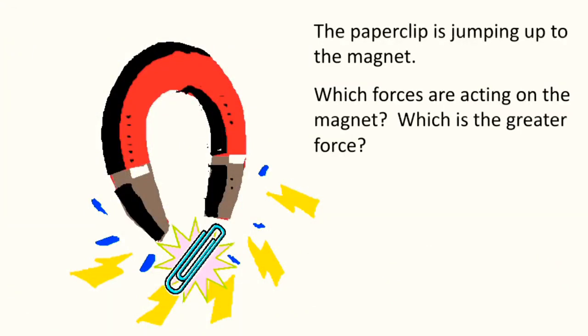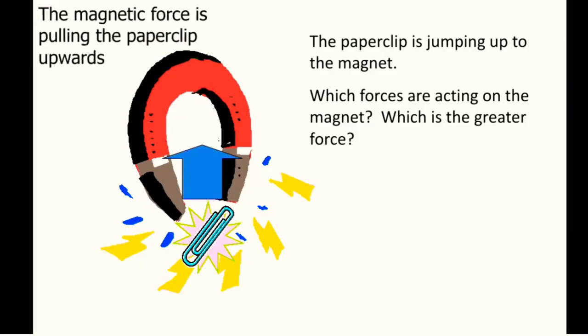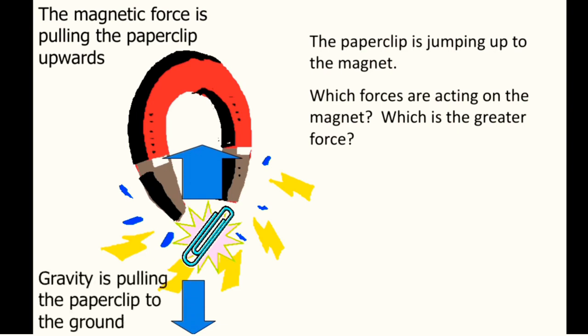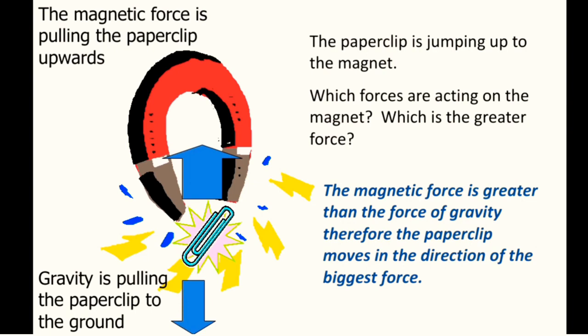The paperclip is jumping up to the magnet. Which forces are acting on it? Which is the greater force? The magnetic force is pulling the paperclip upwards, while gravity is pulling the paperclip to the ground. The magnetic force is greater than the force of gravity; therefore, the paperclip moves in the direction of the biggest force. The paperclip sticks to the magnet because the magnetic force is stronger than gravity, so it doesn't simply fall.